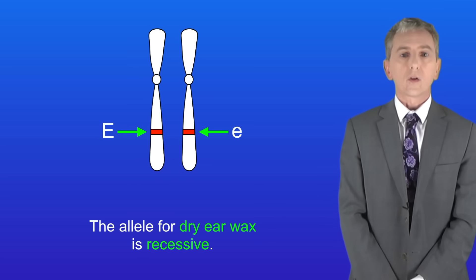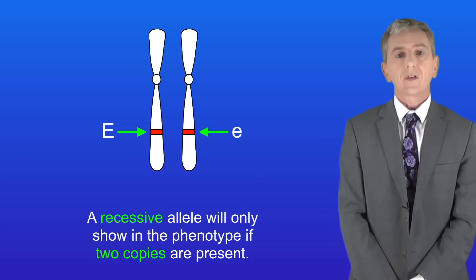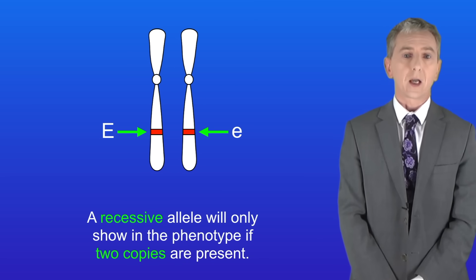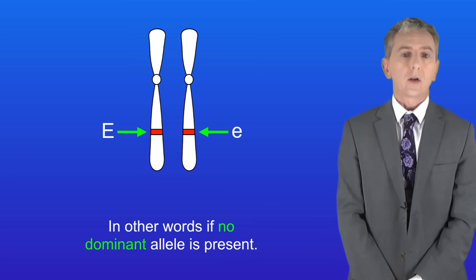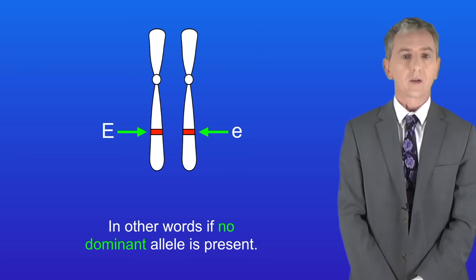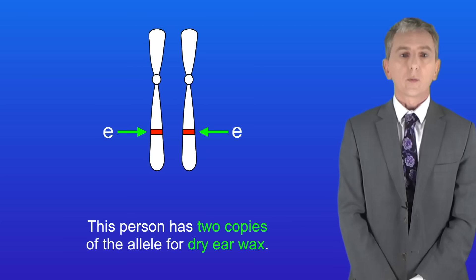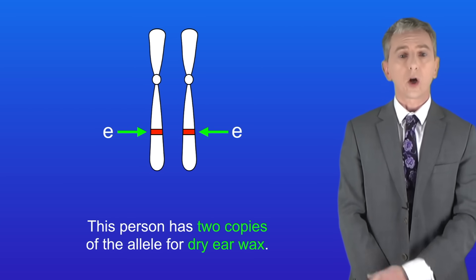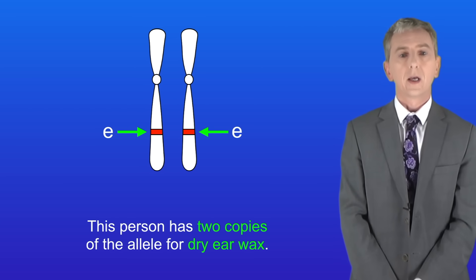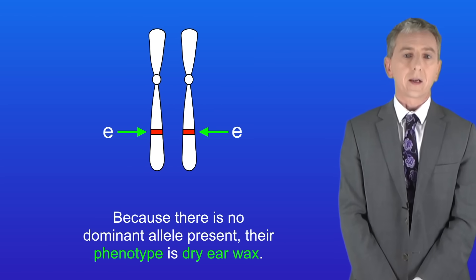The allele for dry earwax is recessive. A recessive allele will only show in the phenotype if two copies are present. In other words, if no dominant allele is present. As we saw before, this person has two copies of the allele for dry earwax. So because there's no dominant allele present, their phenotype is dry earwax.